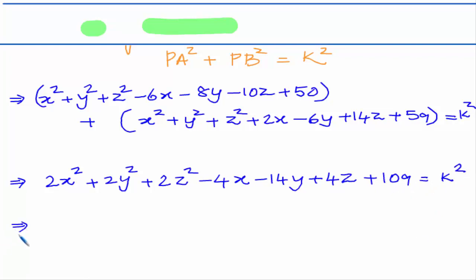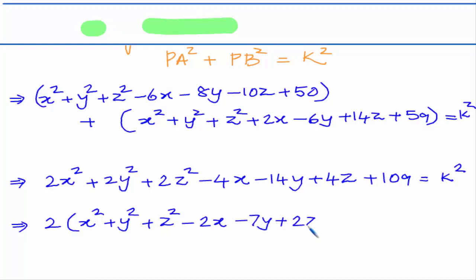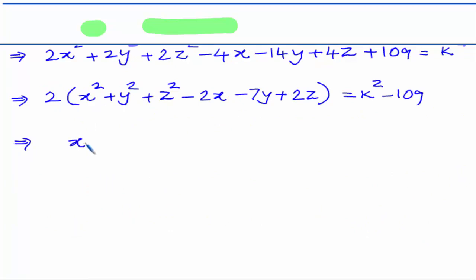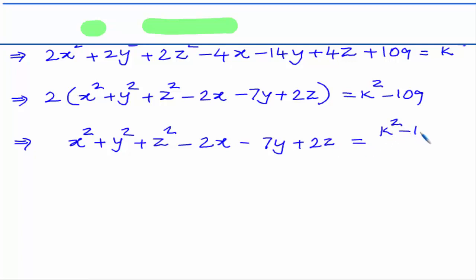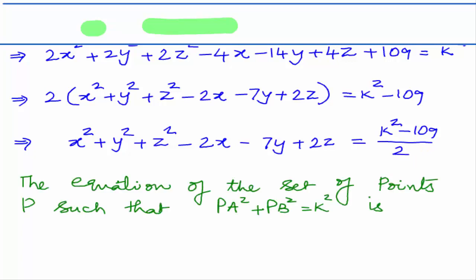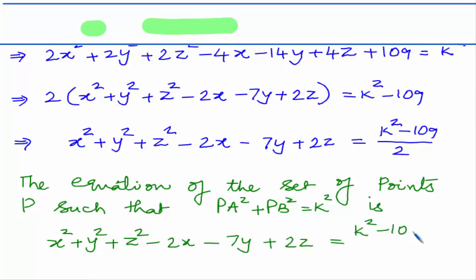Taking 2 as common factor: 2(X² + Y² + Z² - 2X - 7Y + 2Z) + 109 = K². Therefore, X² + Y² + Z² - 2X - 7Y + 2Z = (K² - 109)/2. This is the equation of the set of points P such that PA² + PB² = K².